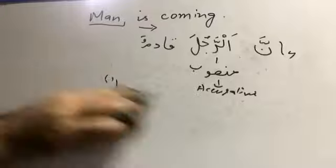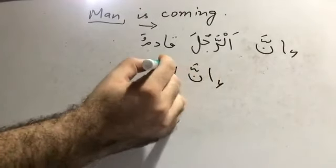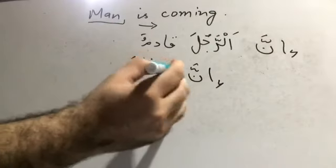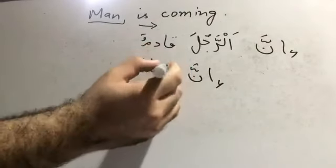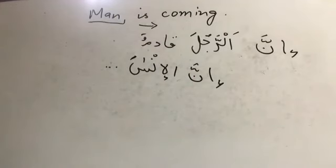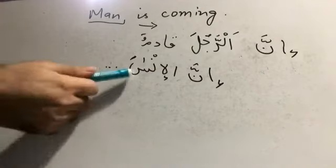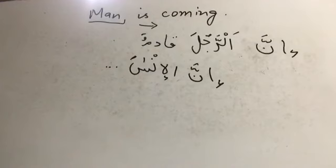I'll give you an example from the Quran. Surah Adiyat says: inna al-insana li-rabbihi la-kanood — 'Certainly the man is ungrateful.' So it puts emphasis. Or you have from Surah Asr: inna al-insana la-fi khusr. And further in the same surah: inna al-insana li-rabbihi la-kanood, wa inna hu ala zalika la-shaheed, wa inna hu li-hubb il-khayri la-shadeed.